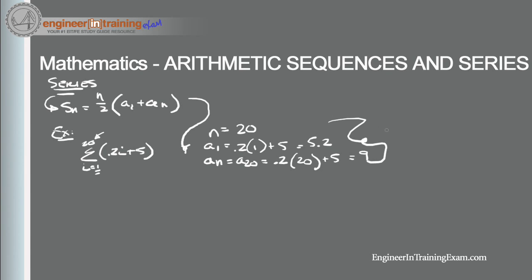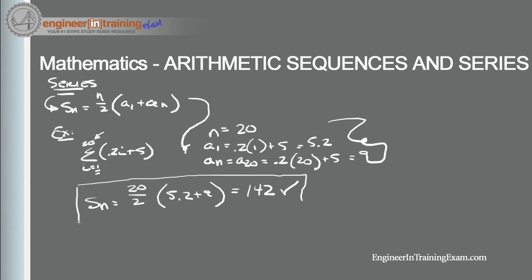Now we have all the information needed to plug into the general equation. S_n = (20/2)(5.2 + 9) = 10 * 14.2 = 142. This tells us that the first 20 terms of the arithmetic sequence defined by 0.2i + 5 sum to 142.